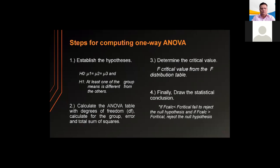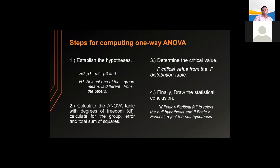The steps for computing a one-way ANOVA are: first, establish the null and alternative hypotheses; second, calculate the ANOVA table with degrees of freedom, computing the group, error, and total sum of squares; third, determine the F-critical value from the F-distribution table; and last, draw the statistical conclusion — if F-calculated is less than F-critical, fail to reject the null hypothesis; if F-calculated is greater than F-critical, reject the null hypothesis.